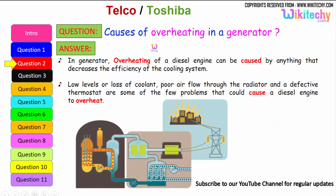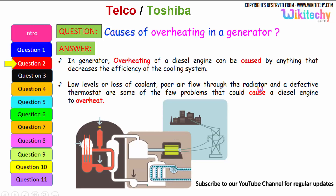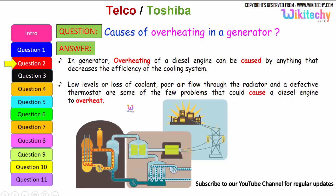Let us move on to the next question: causes of overheating in a generator. Overheating of a diesel engine can be caused by anything that decreases the efficiency of the cooling system. It can be due to the loss of coolant or low levels of coolant, poor airflow through the radiators, and a defective thermostat — some of the few problems that could cause a diesel engine or a generator to overheat.